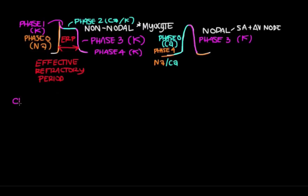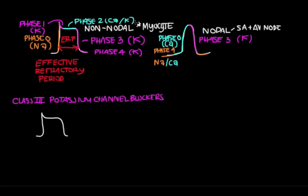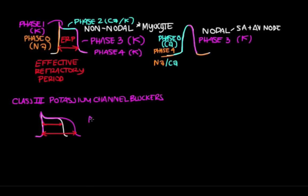Class 3 antiarrhythmics are your potassium channel blockers. These work primarily at non-nodal cells, where potassium is important at phase 3. When potassium channel blockers are on board, we get an elongated phase 3 period because we're blocking potassium channels. This extends the effective refractory period, so just like class 1 drugs, there's more time between depolarizations, meaning more time between heartbeats, meaning you're slowing down the heart rate. Potassium channel blockers are great for treating SVTs and VTAC.